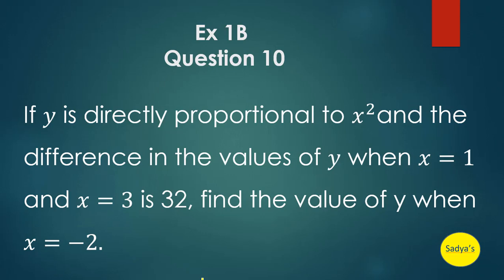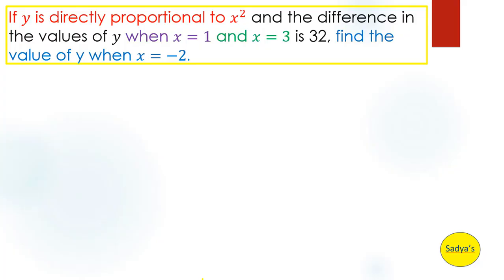So much information in just three lines. Let's rewrite the question to separate the information given to us. The first information, written in red, is: y is directly proportional to x squared.